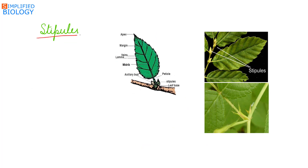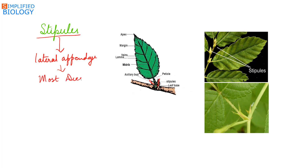Stipules are lateral appendages present at the leaf base. Leaves with stipules are called stipulate, while leaves without stipules are known as estipulate.